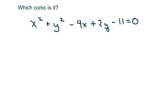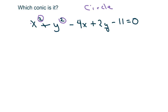We're going to determine which conic this is. Since these are both squared and the coefficients in front are the same, that means it's a circle. If you don't know that, you can go ahead and complete the square to find out. I don't like the one here so we'll take that off. Since it's a plus here, we're going to complete the square by grouping.